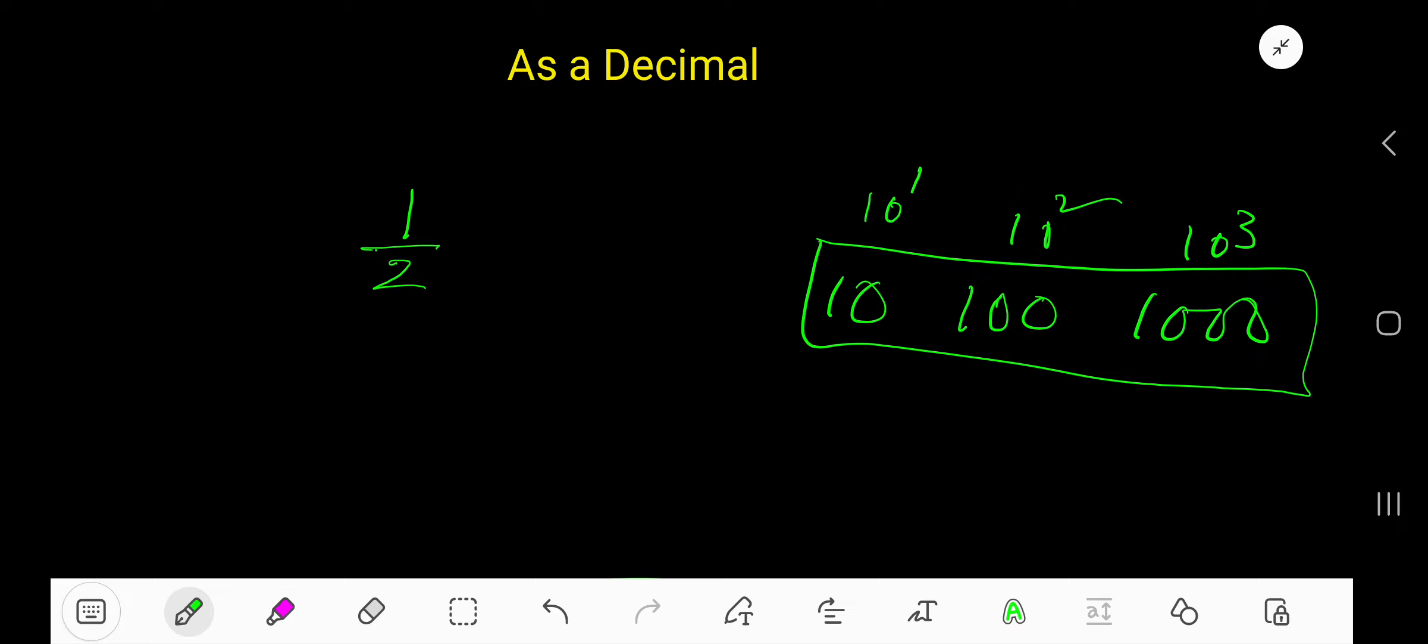So look, if I multiply both numerator and denominator by 50, in the denominator I will get 100. Now count the number of zeros in the denominator, so 2 zeros.